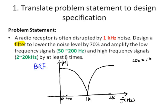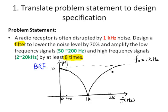Let's make the pass band gain equal to 10. The central frequency should be at 1 kHz. In the problem statement, it says we want to amplify the low frequency and high frequency signal by at least 8 times. So when the frequency is lower than 200 Hz and when the frequency is greater than 2 kHz, we want to make the gain of the circuit at least 8.